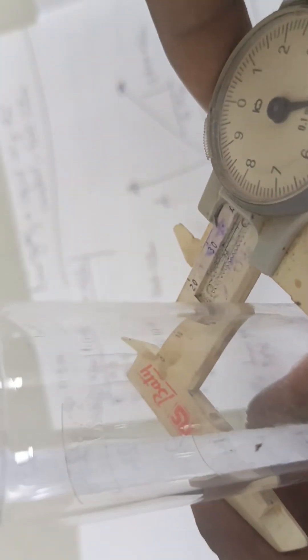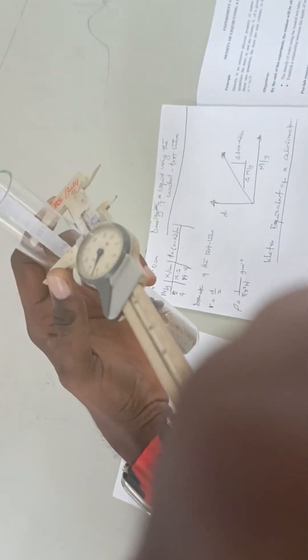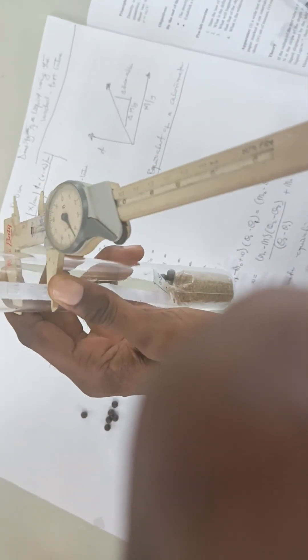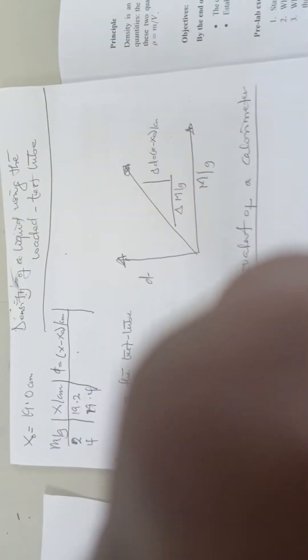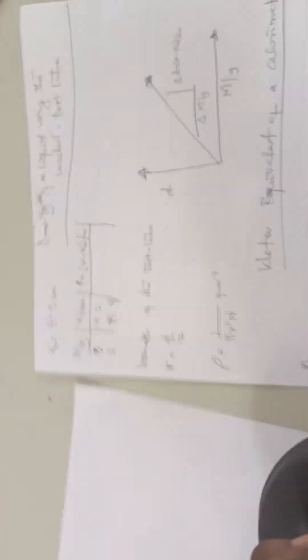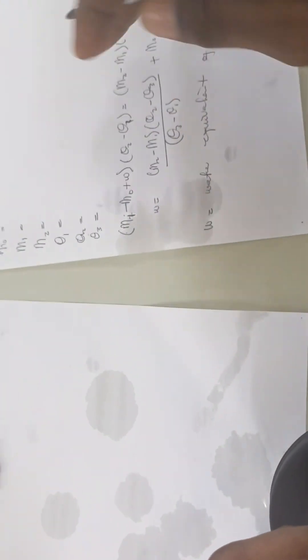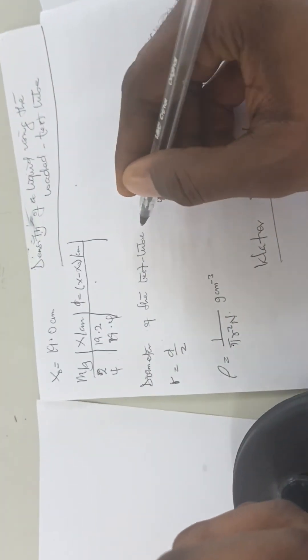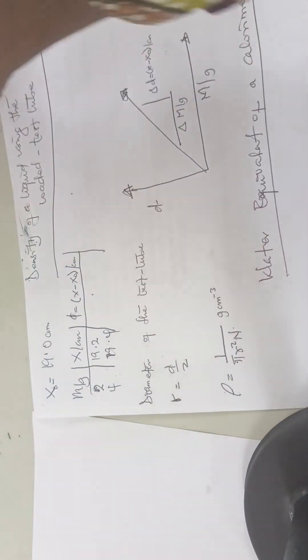After taking all the values, we have to measure the diameter of the test tube—the external diameter of the test tube using the vernier caliper. So we record the diameter of the test tube.